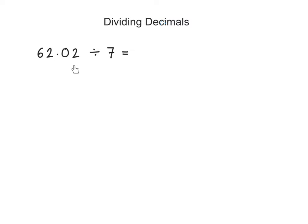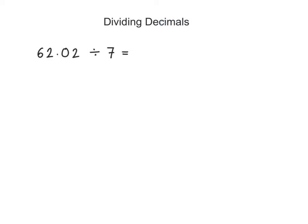Here we have a division where we are dividing a decimal number by an integer, a whole number. How do we do these divisions? All we need to do is write this division in the long division form, sometimes referred to as the bus stop method. So let's write this down.